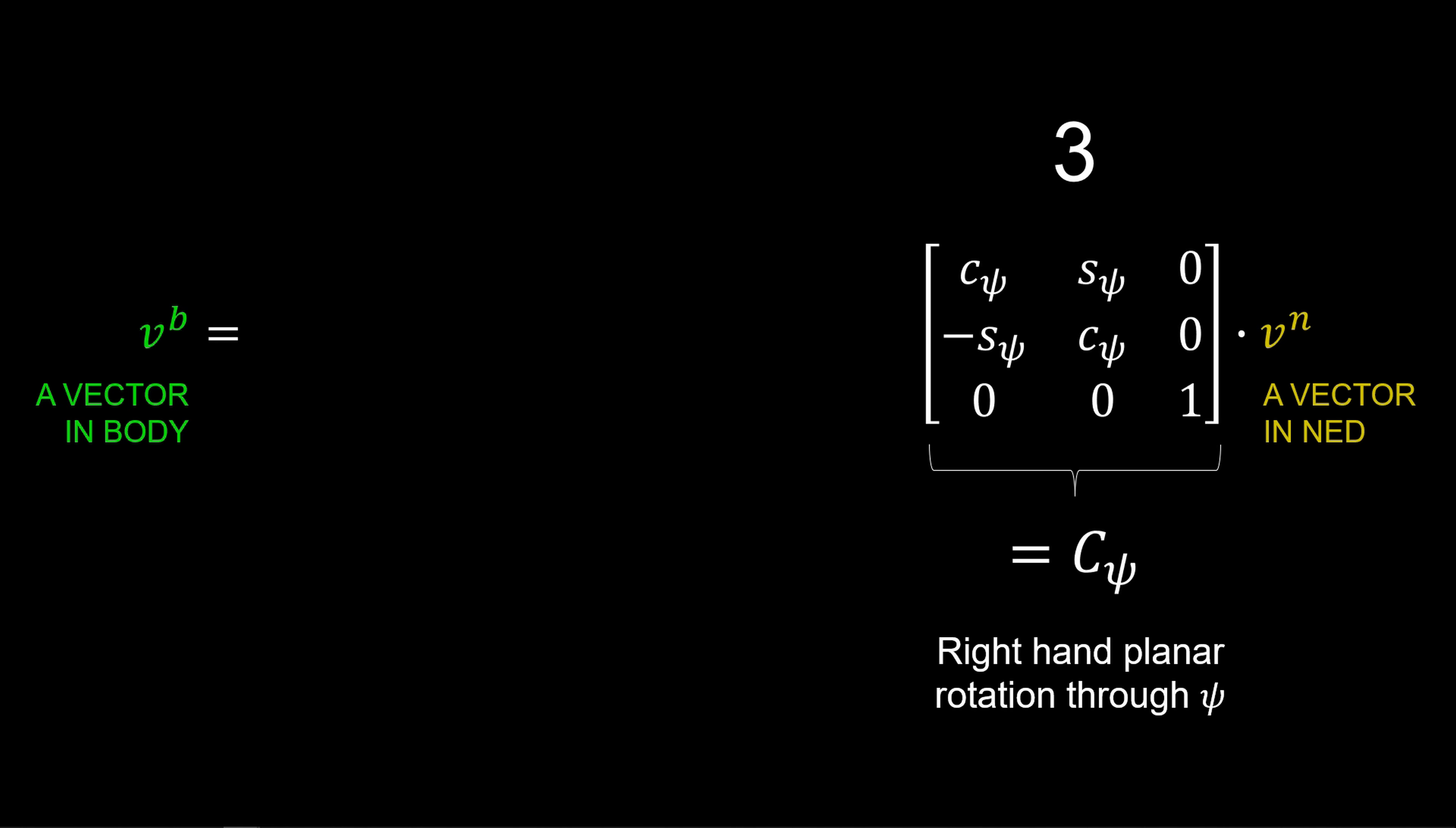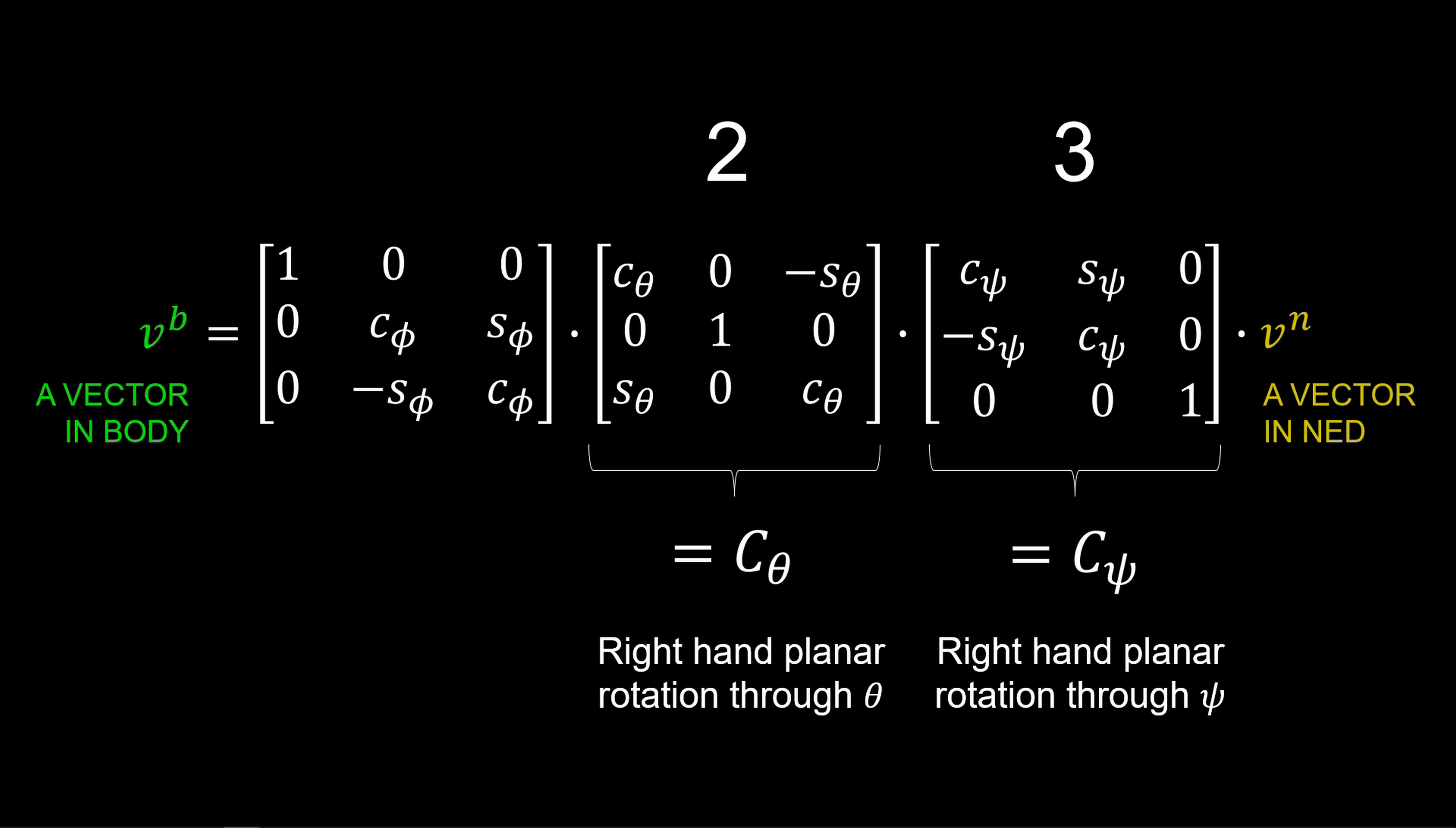These Euler angles are very useful. For example, suppose we have a vector resolved in the northeast-down-coordinate system and we want that vector resolved in the body-coordinate system. This involves some sort of transformation. We essentially just went through this transformation graphically, involving three distinct planar rotations. The first was a planar right-hand rotation about the yaw angle, and then we did a right-handed pitch rotation about theta. And finally, we showed a right-handed rotation about the roll angle, phi.